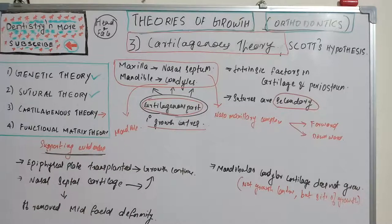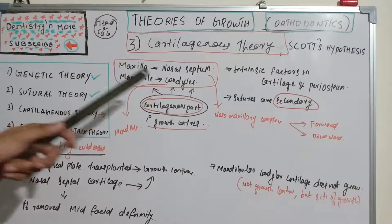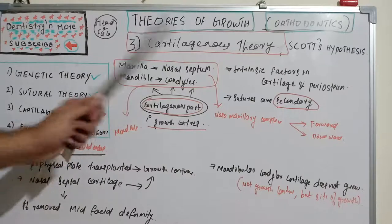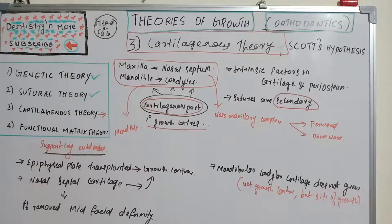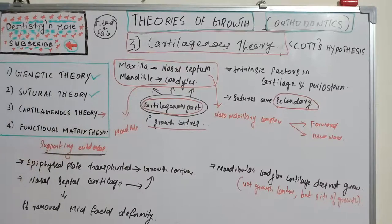The condylar cartilage needs to be considered like a long bone with cartilages present at both ends, acting as growth centers. The growth of the mandible is explained by the condylar cartilage. All the cartilages throughout the skull are primary centers of growth, and the growth of the maxilla is attributed to the nasal septal cartilage.